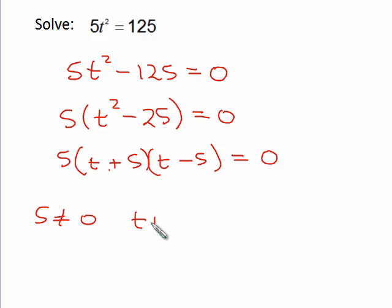The second factor, t plus 5 is zero, and then I need to set the third, t minus 5 is zero. So if I solve this first one, I get t is negative 5.